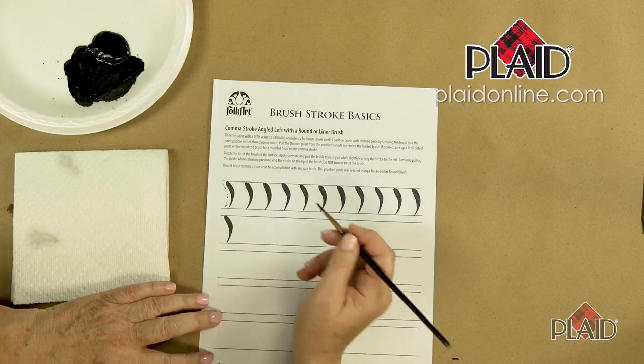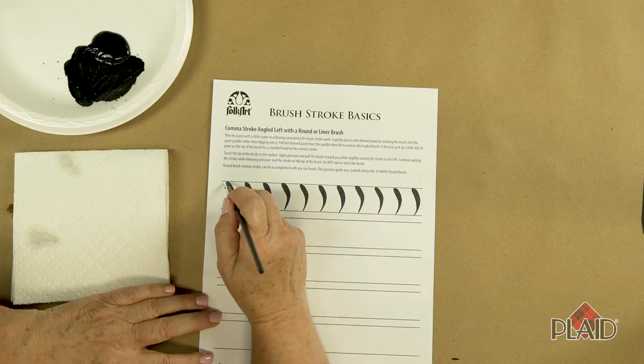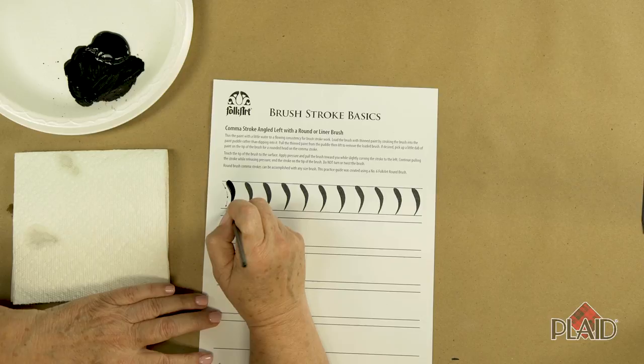The arrows are indicating, again, we're starting at the top, ending at the bottom. Let's try that stroke. We're going to apply pressure, pull, lift, begin releasing pressure, and back up on the point of the brush.